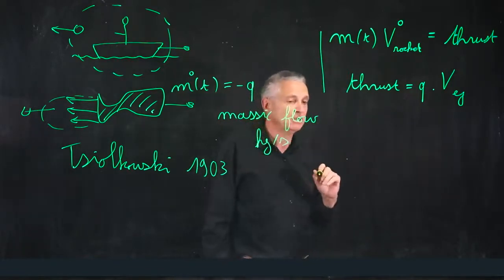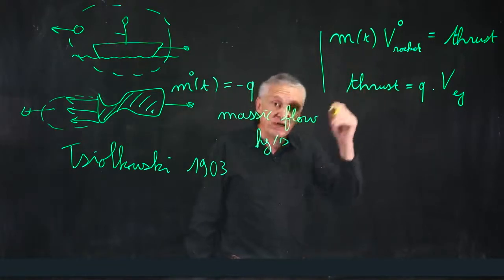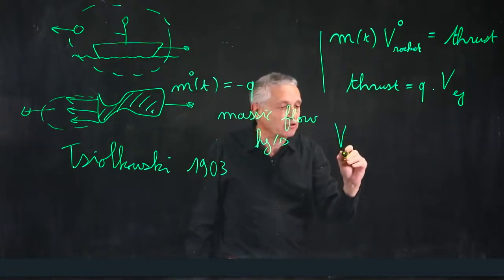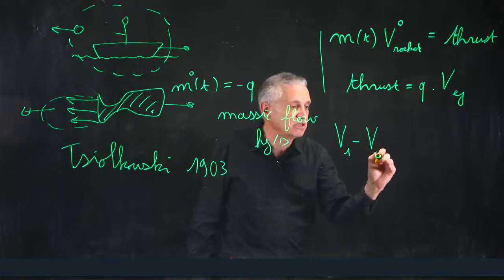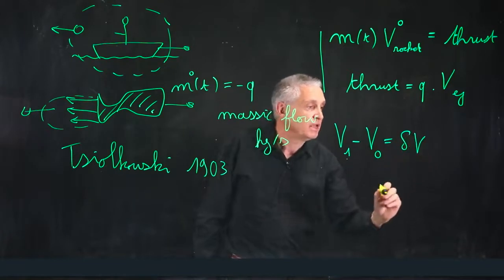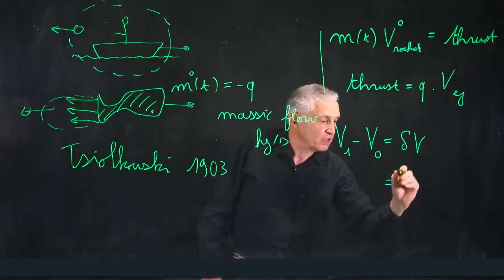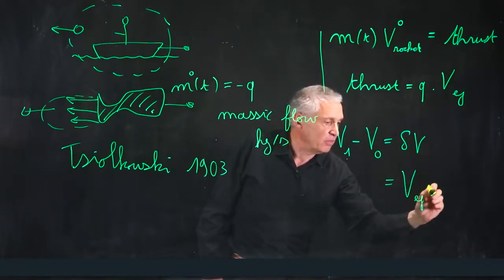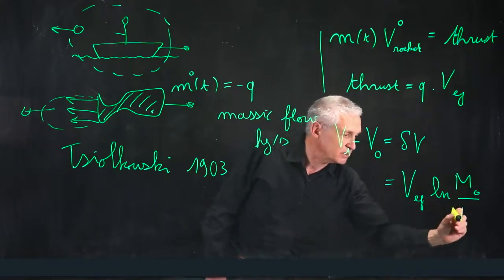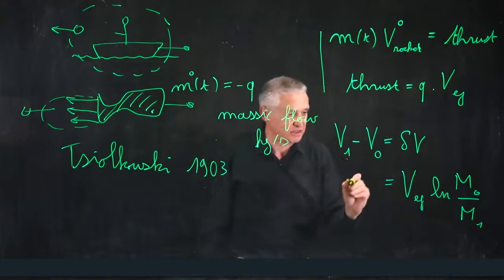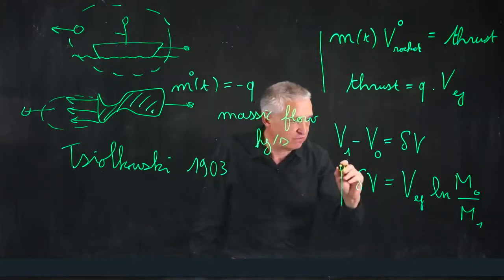If you know the logarithm. That on a combustion phase, you find that the final velocity of the rocket minus the initial velocity, which is called the delta V, is simply the ejection speed multiplied by the log of the initial mass on the final mass. And that's the formula.